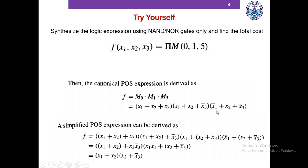We can directly implement this expression as a circuit, but it will be a large one, so we apply Boolean algebra to reduce it. Using the distributive property — the most used and most important property — we take common x1 plus x2. Applying x plus y plus x plus z = x plus yz, and since x times x0 equals 0, that term vanishes, leaving a much simpler expression.